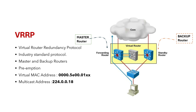VRRP uses multicast address 224.0.0.18 for communication between routers. There are two versions of VRRP: version 2, which supports IPv4 only, and version 3, which supports both IPv6 and IPv4 and also includes security and efficiency improvements.